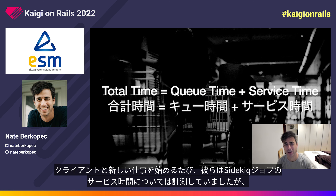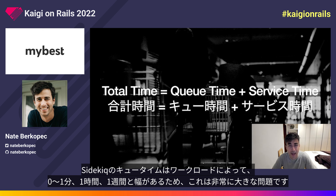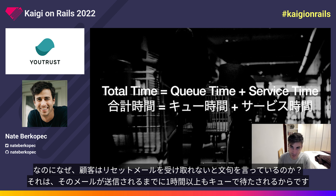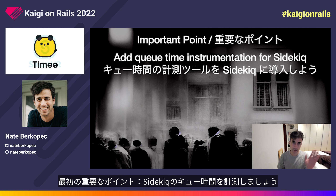So many times I've started a new job with a client, and while they have tons of instrumentation for the service times of their Sidekiq jobs, they might have zero instrumentation of their queue times. This is a huge problem because queue times in Sidekiq, depending on the workload, can be anywhere from zero to one minute, to one hour, to even one week. I've walked into clients where they think their password reset email takes just five seconds to send, but then they get customer complaints — the email is spending an hour or more in a queue before it's sent. The dashboard kind of lies to you, especially with background jobs.